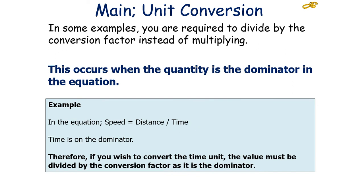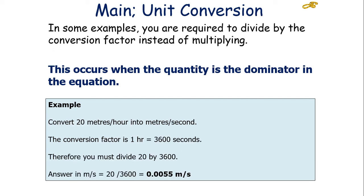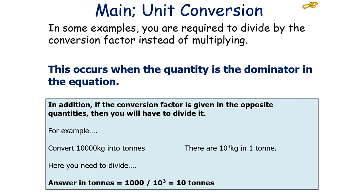In some examples, you're actually required to divide by the conversion factor instead of multiplying. This occurs when the quantity is the denominator in the equation. So in the equation speed equals distance over time, time is on the denominator. If you wish to convert the time value, the value must be divided by the conversion factor as it's the denominator. For example, convert 20 metres per hour into metres per second. You work out how many seconds are in one hour. One hour has 3,600 seconds, so you divide your value by 3,600. In addition, if the conversion factor is given in the opposite quantities, you'll have to divide it. For example, convert 100,000 kilograms into tonnes. If you know there's 10 to the 3 kilograms in a tonne, you would then need to divide to get your answer of 10 tonnes.